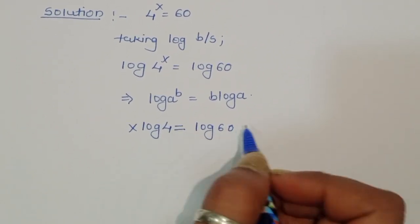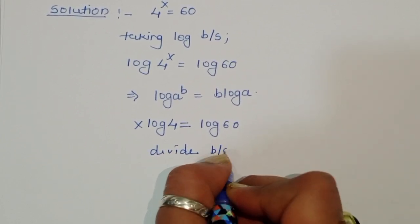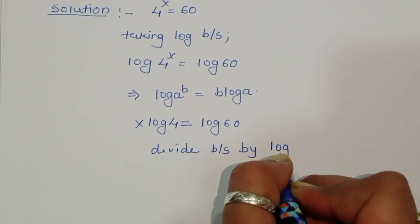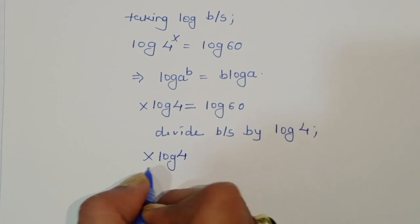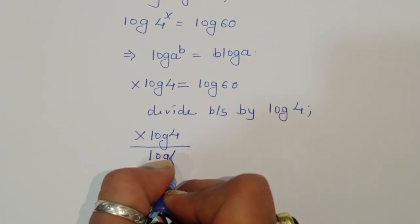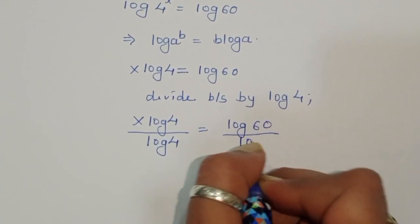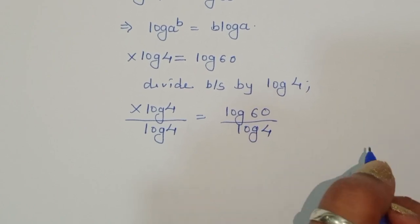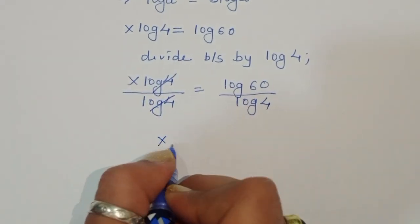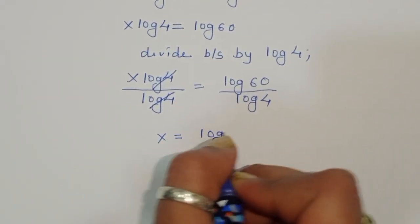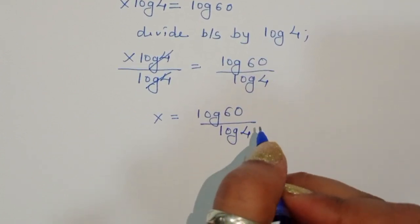We divide both sides by log 4. So x times log of 4 divided by log of 4 is equal to log of 60 divided by log of 4. Log 4 cancels on the left, leaving x is equal to log of 60 divided by log of 4.